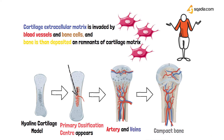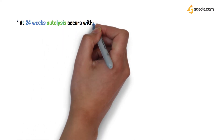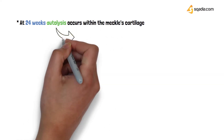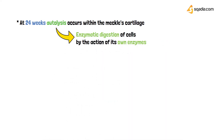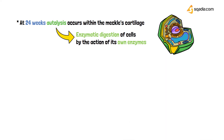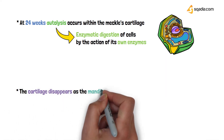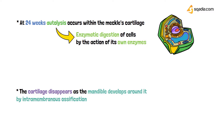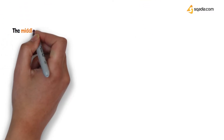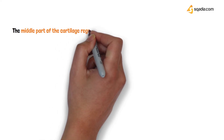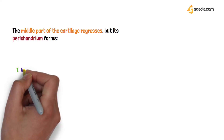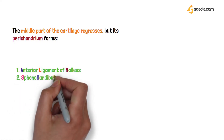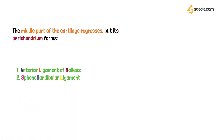Around 24 weeks, autolysis occurs within Meckel's cartilage. Autolysis is an enzymatic digestion of cells by their own enzymes, so the cartilage disappears. The mandible develops around it by intramembranous ossification. When Meckel's cartilage regresses, it leaves behind the perichondrium, which is the outer layer of the bone.